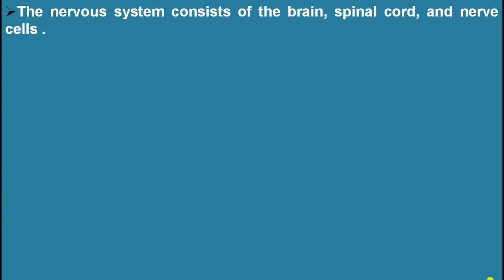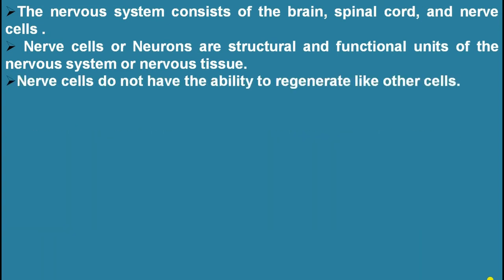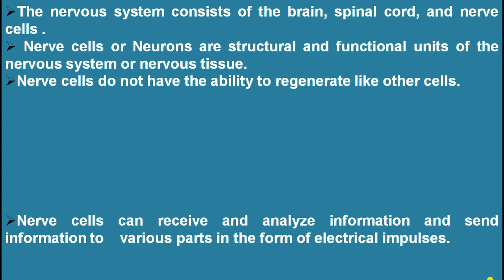The nervous system consists of the brain, spinal cord, and nerve cells. Nervous cells or neurons are structural and functional units of the nervous system or nervous tissue. Nervous cells do not have the ability to regenerate like other cells. Nervous cells can receive and analyze information and send information to various parts in the form of electrical impulses.